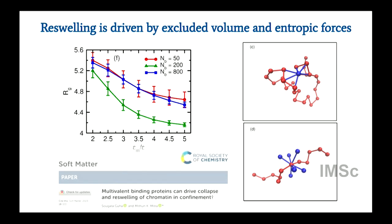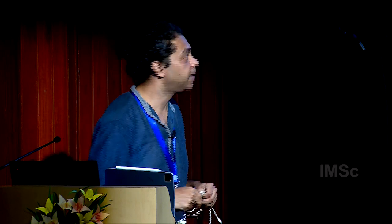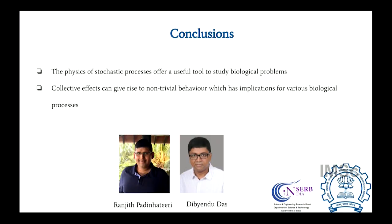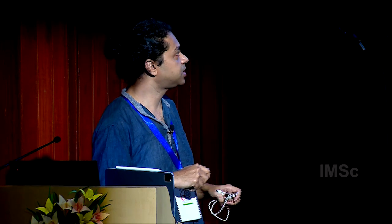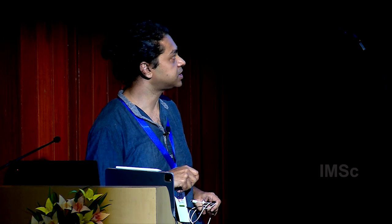To conclude: stochastic processes offer a very useful tool to study biological problems. When you look at these biological systems, even seemingly simple systems, collective effects can give rise to very non-trivial behavior with implications for various biological processes. I acknowledge my students, and my collaborators Ranjit in the bio department at IIT and Bendu in the physics department. Thank you.